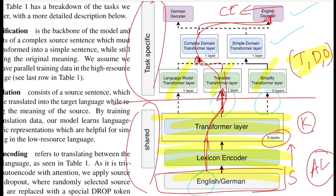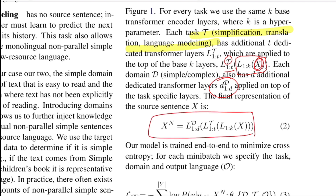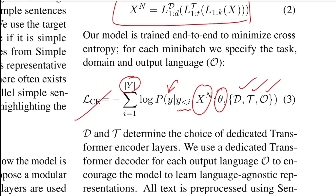The shared transformer layers are expected to learn generic embeddings serving all tasks. However, they still depend on the input source language. Formally, for input x, you pass through K shared encoder layers, then T task-specific layers, then D domain layers (simple or complex). This final representation feeds the decoder, which minimizes cross-entropy loss by autoregressively predicting y token by token.